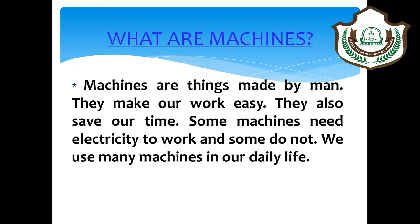We see many things around us — some are natural and some are man-made. Natural things are trees and cats. Man-made things are pencils, televisions, mobile phones, and computers. These are man-made things. They make our work easy and also save our time.